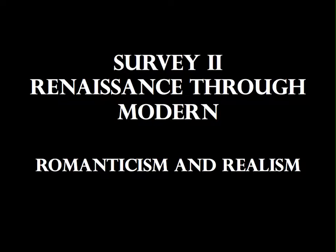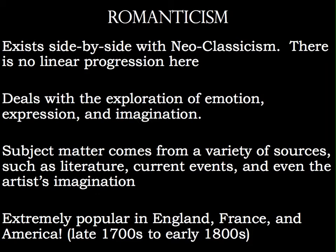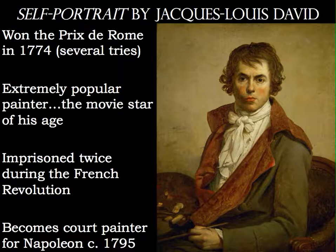Today's lecture deals with Romanticism and Realism, covering the very end of the 1700s and heading into the early 1800s. In our next couple of lectures we'll see the advent of photography as well as our entry into the world of modern art. Romanticism exists side by side with neoclassicism, and there is no linear progression during this time period. It is extremely popular in England where it really begins, but we'll look mostly at what occurs in France, Spain, and for the very first time, art coming from America.